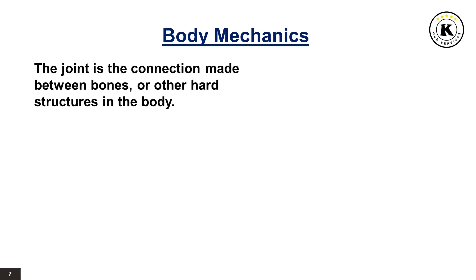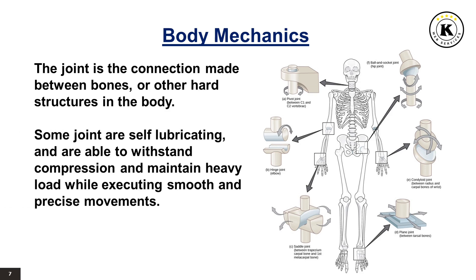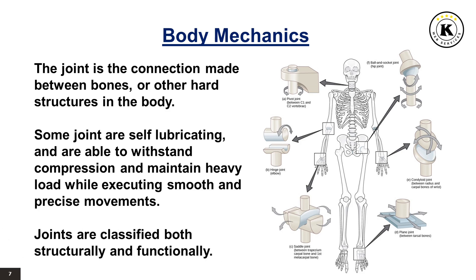A joint or articulation is the connection made between bones or other hard structures in the body which link the human skeletal system into a functional whole. They are constructed to allow for different degrees and types of movement. Some joints, such as the knee, elbow, and shoulder, are self-lubricating, almost frictionless, and are able to withstand compression and maintain heavy loads while still executing smooth and precise movements. Other joints, such as sutures between the bones of the skull, permit very little movement, only during birth, in order to protect the brain and the sense organs. The connection between a tooth and the jawbone is also called a joint, described as a fibrous joint known as a gomphosis. Joints are classified both structurally and functionally.